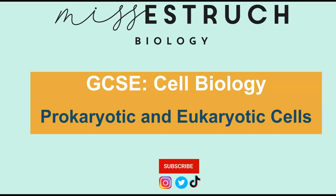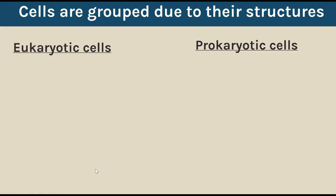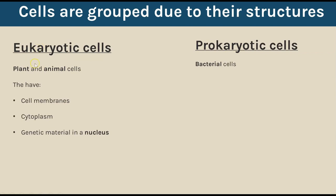Now I'm going to be going through prokaryotic and eukaryotic cells for GCSE biology. Let's look at some of the key differences between prokaryotic and eukaryotic cells. First of all, this is just a way to group cells based on similarities or differences in their structures. Eukaryotic cells are plant and animal cells - you'll be familiar with that from key stage 3 - whereas prokaryotic cells would be bacteria cells.